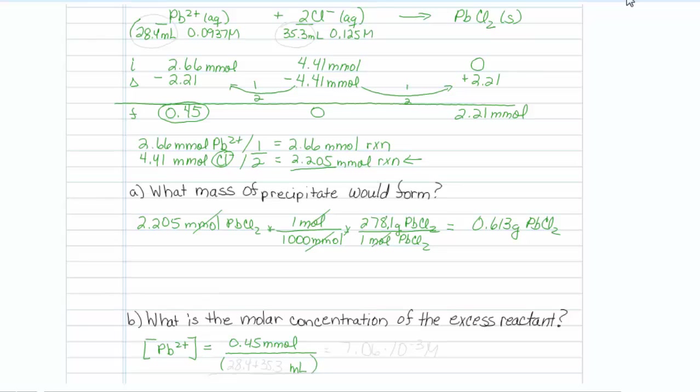We have, when we mixed, 28.4 mL and 35.3 mL. So don't forget to go back and look at the mLs that you mixed, volumes are additive, add those up, divide them into 0.45, and we discover that our concentration of lead is 7.06 times 10 to the minus 3 molar. That should work out pretty well.